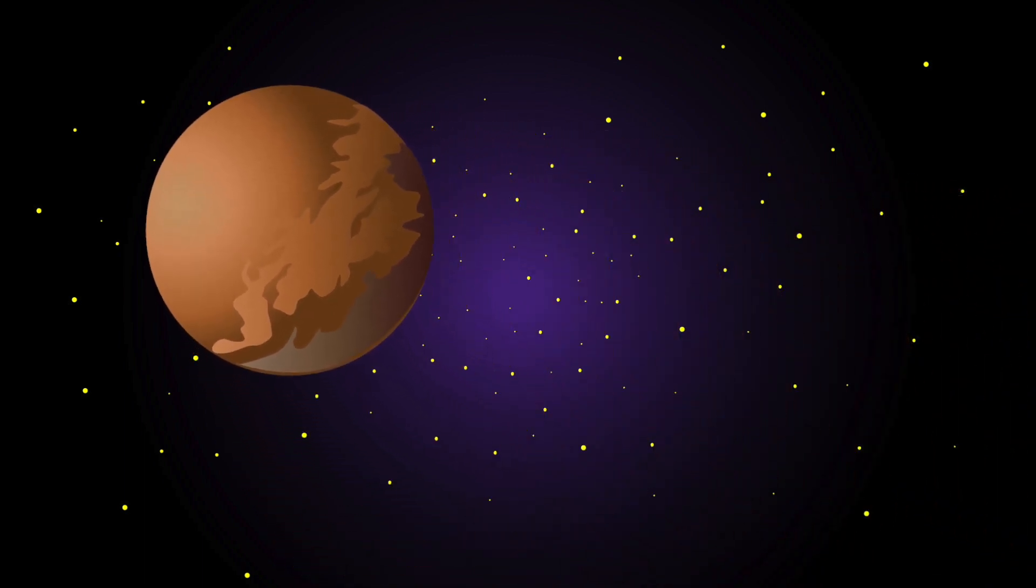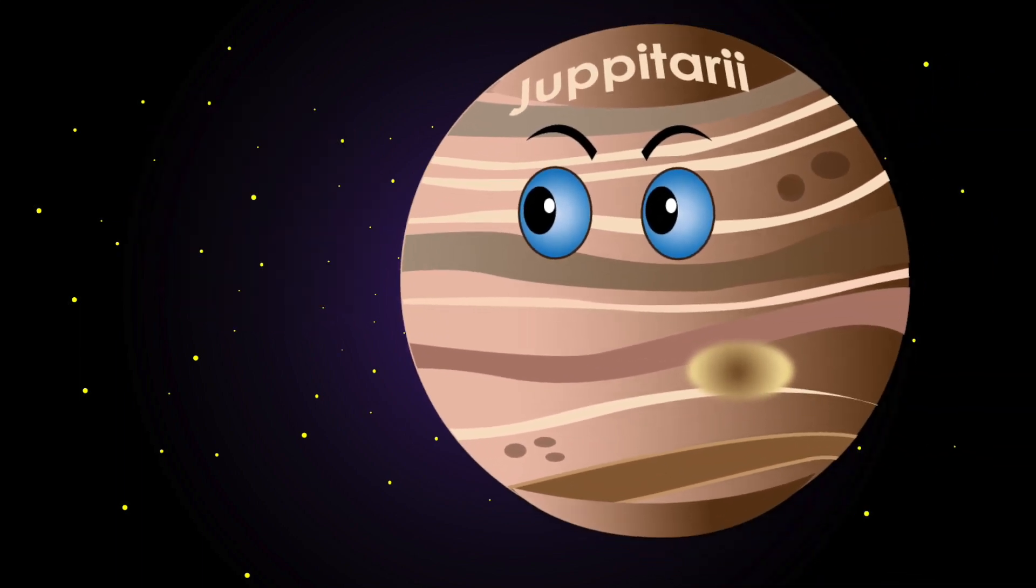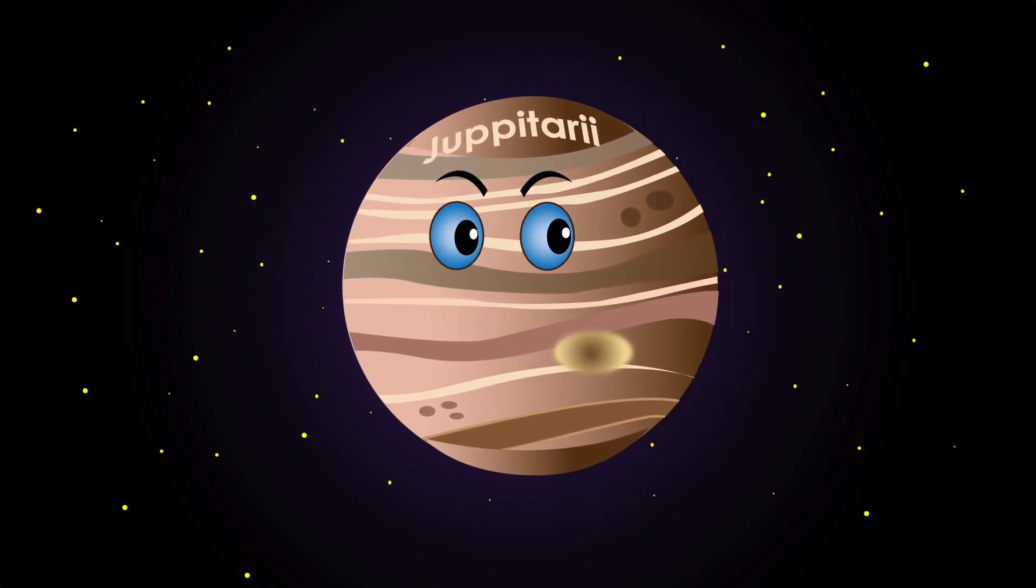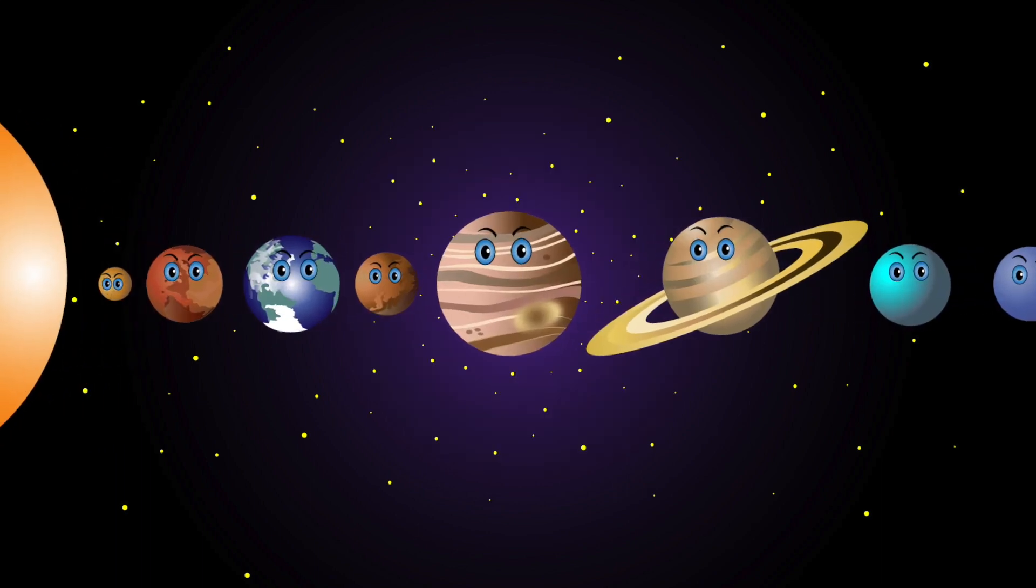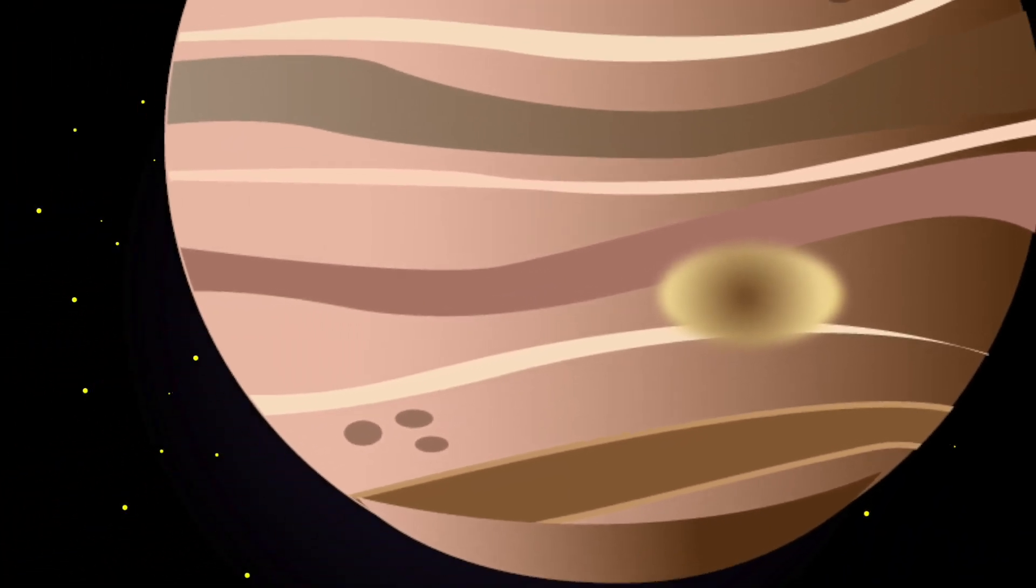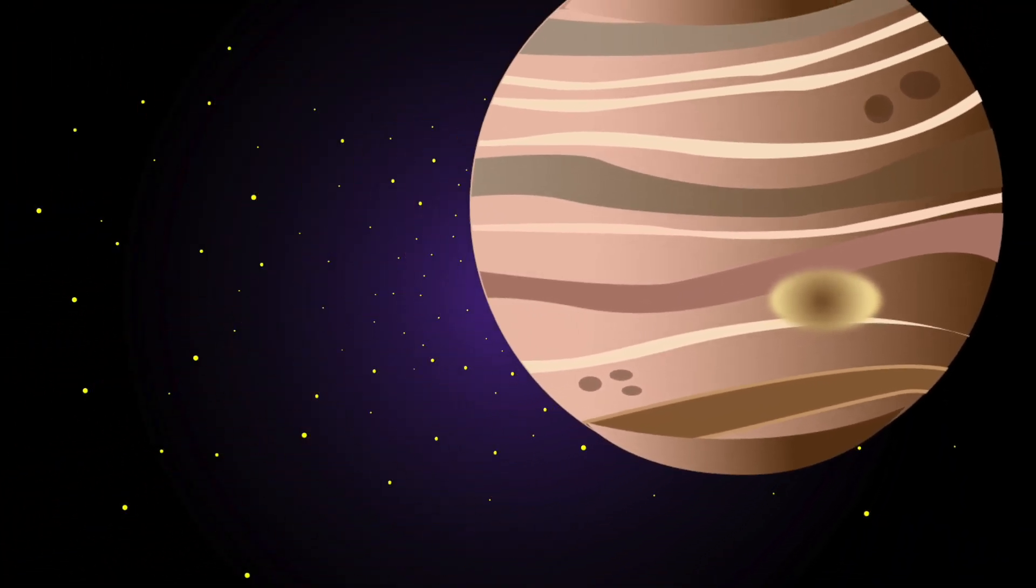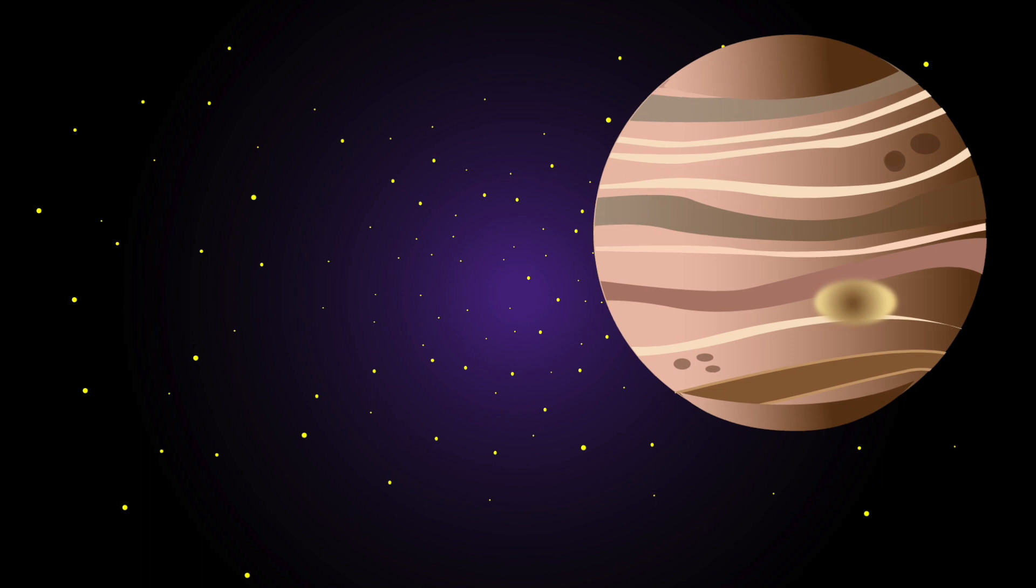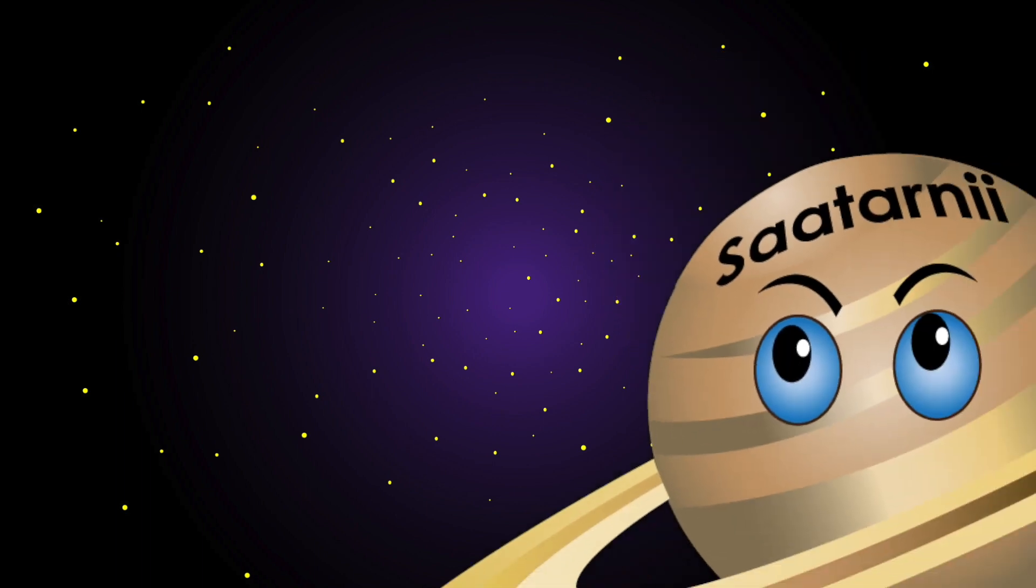My name is Jupiter. I am covered in clouds. I'm the fifth planet from the sun. My giant red spot is a raging storm. As for size, I'm the biggest one.